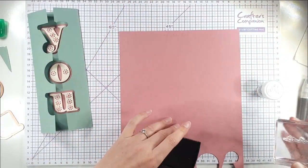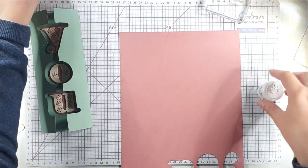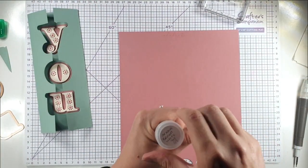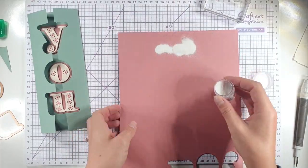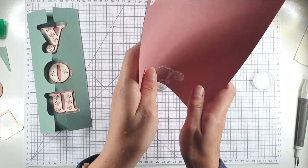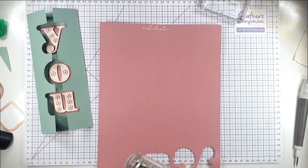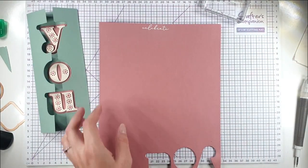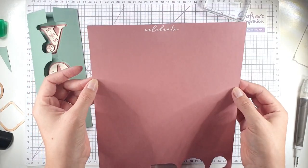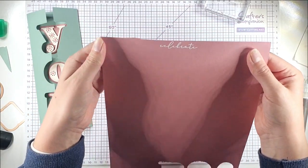I want to heat emboss it with white embossing powder, so I've got my Superfine Opaque Bright White from WOW. Let's heat that up. If you've got something delicate that you're heat embossing like this, I would always recommend a superfine embossing powder.